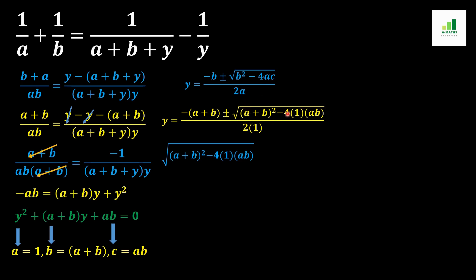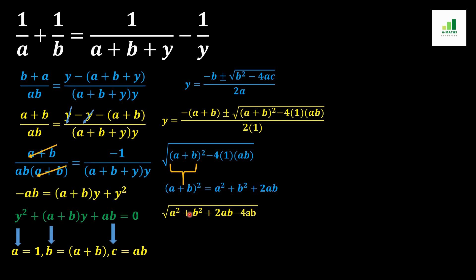Now we simplify the expression under the root. We know that (a+b)² expands as a² + b² + 2ab. We replace (a+b)² with this value, and -4·1·ab gives -4ab inside the root.